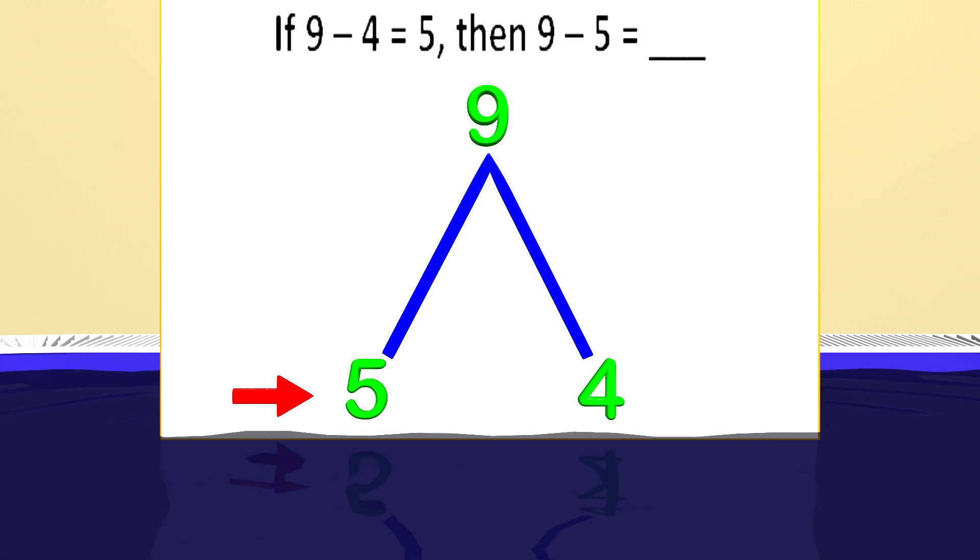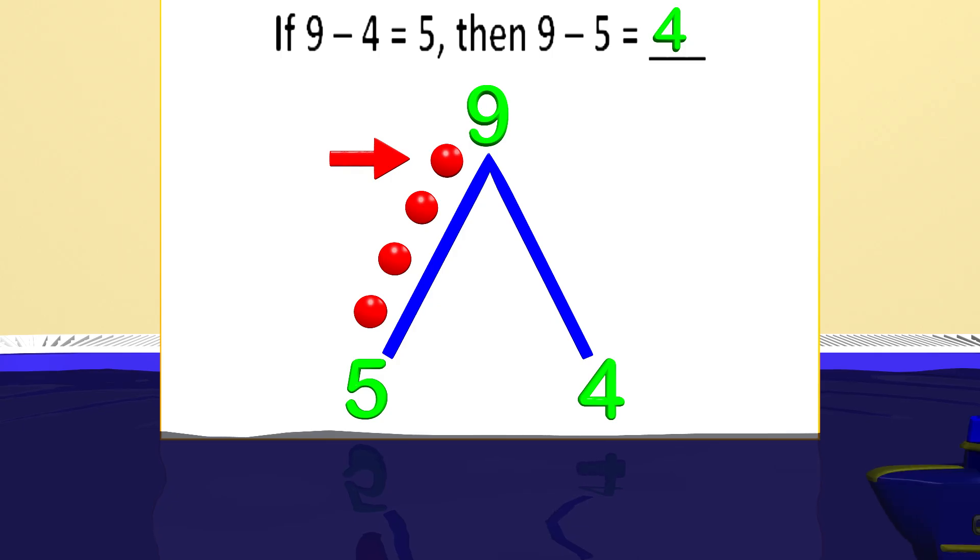Let's solve the part of the problem we don't know. 9 subtract 5 equals what? You probably figured it out, but let's use addition to find the answer. We will start at the partner we know, which is 5. Let's count up from 5 until we get to the total. Starting from 5, we count 6, 7, 8, 9. We counted 4 numbers, so the other partner is 4. Amazing job! I'm sure you can now see that subtraction and addition are related.